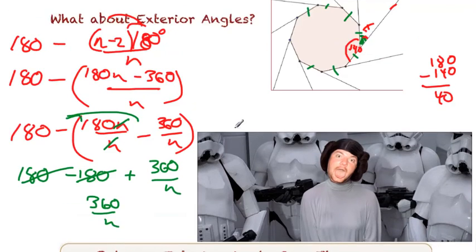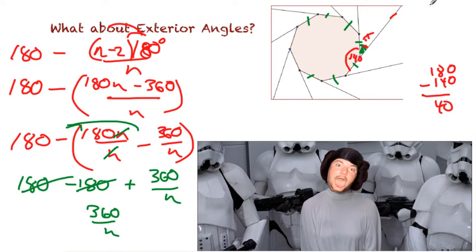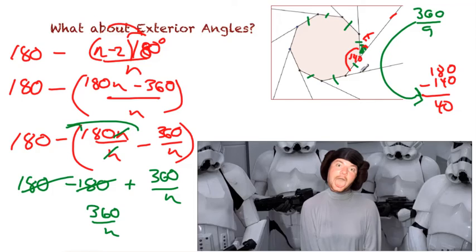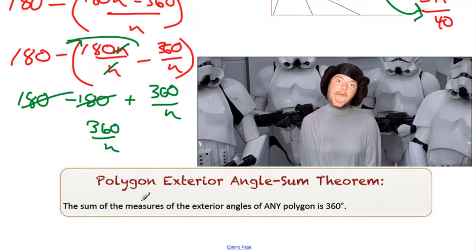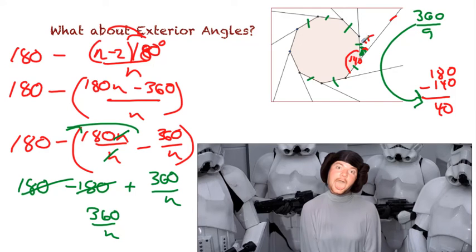Let's try that — this is a nonagon. So if I take 360 and divide it by nine, I get 40. How quick is that! We have a new theorem now. The sum of the measures of the exterior angles in any polygon is 360 degrees. In other words, if you add up all of the exterior angles, they add up to 360 degrees in any polygon — pentagon, hexagon, heptagon, octagon, nonagon, dodecagon, whatever you want.